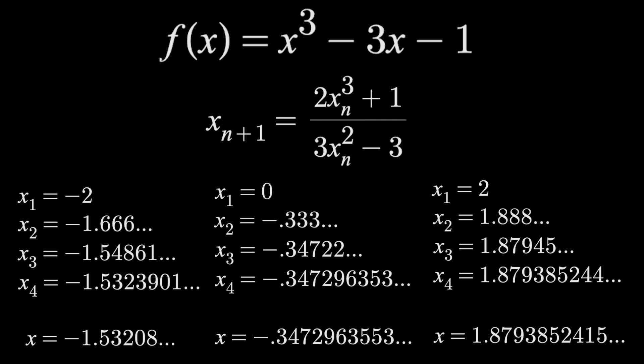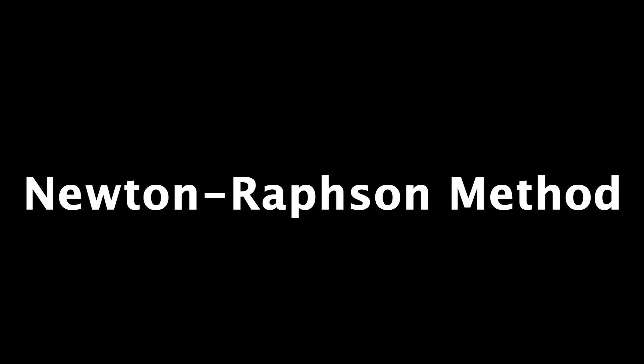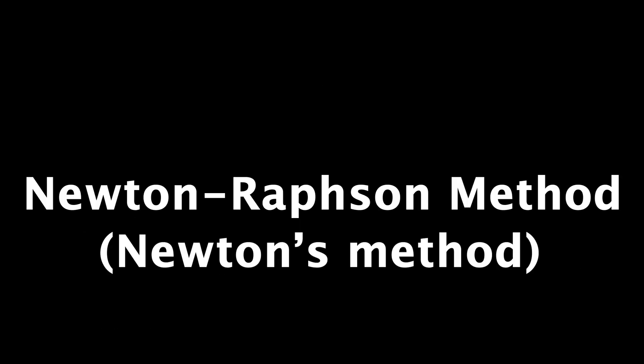Okay, so what we've been seeing is called the Newton-Raphson method, or sometimes just called Newton's method. It's an algorithm for finding zeros of real-valued functions, and here's how it works.